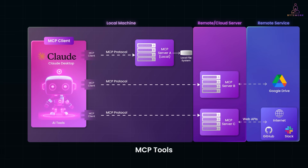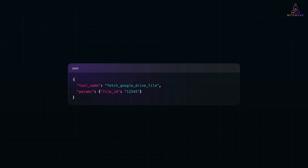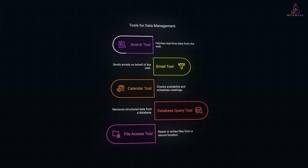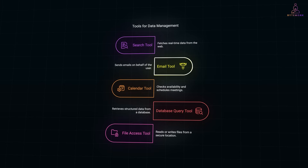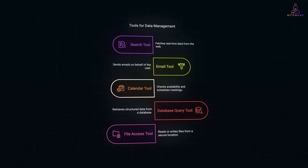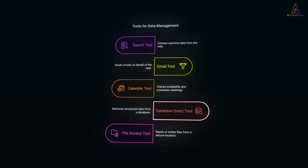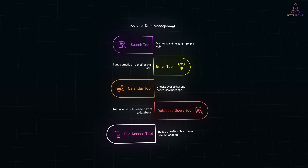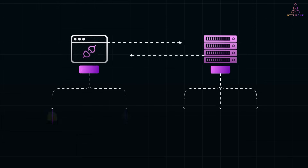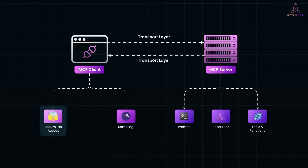The MCP server interacts with these external services by running MCP tools. MCP tools are the external functions, APIs, or actions that an AI assistant can use via MCP. The MCP client sends a request, the MCP server runs the tool — for example, retrieving a file from Google Drive — and sends the result back, which the AI assistant then uses in its response. Types of MCP tools include: a search tool that fetches real-time data from the web, an email tool that sends emails on behalf of the user, a calendar tool that checks availability and schedules meetings, a database query tool that retrieves structured data, and a file access tool that reads or writes files from a secure location.